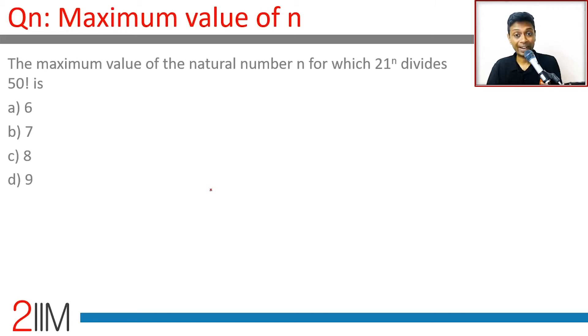The maximum value of the natural number n for which 21^n divides 50 factorial. 50 factorial is 1 into 2 into 3 all the way till 50.